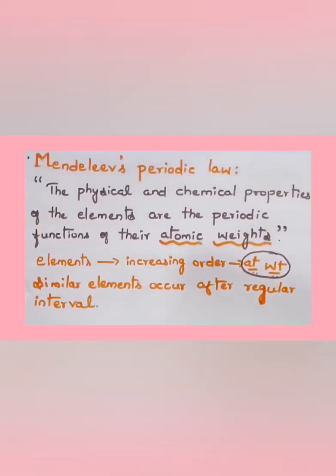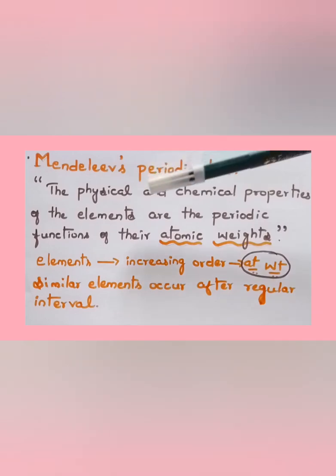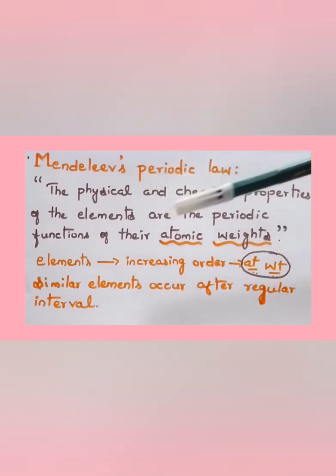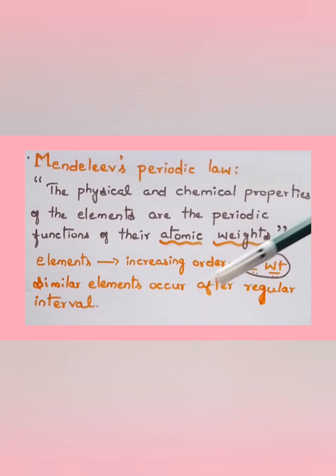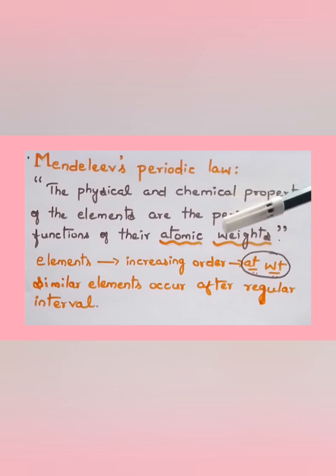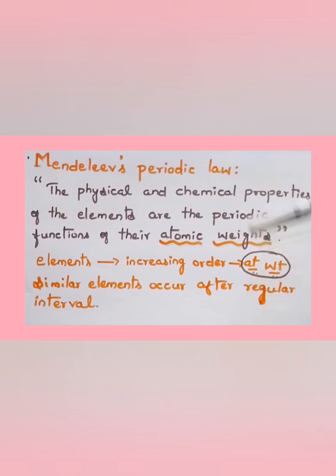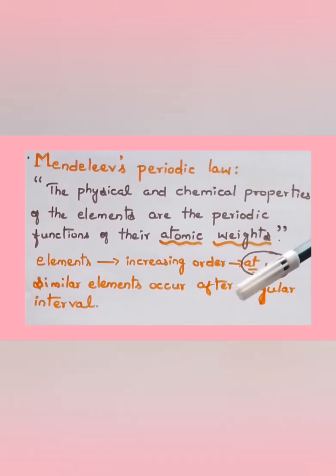Moving to Mendeleev's Periodic Law: he stated that the physical and chemical properties of elements are periodic functions of their atomic weights. This is similar to the previous law — after some regular interval of time, when elements are arranged in increasing order of their atomic weight, similar elements occur after regular intervals.